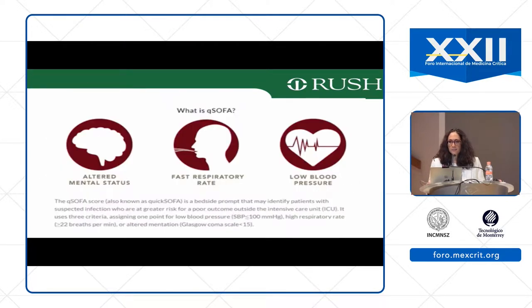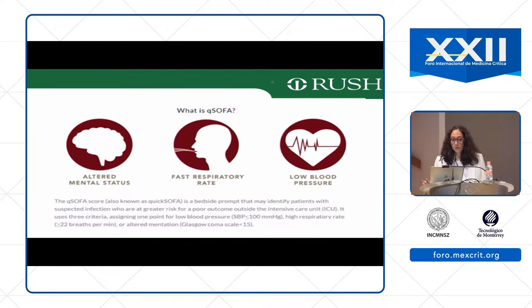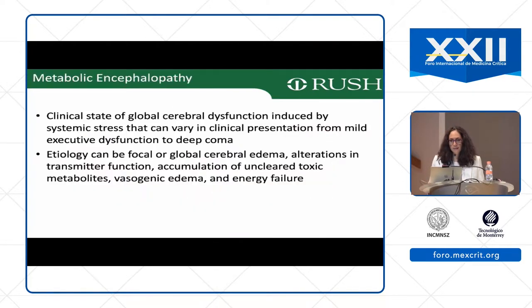The sepsis guidelines changed as of 2016 and included the qSOFA, which is a way to identify patients at risk for not doing well in the setting of sepsis — and that now includes altered mental status. If you have a patient with altered mental status, a fast respiratory rate, and lower blood pressure, these are patients that perhaps need to go to the ICU so that care can be more aggressive and blood pressure managed differently. The target remains a mean arterial pressure greater than 65.